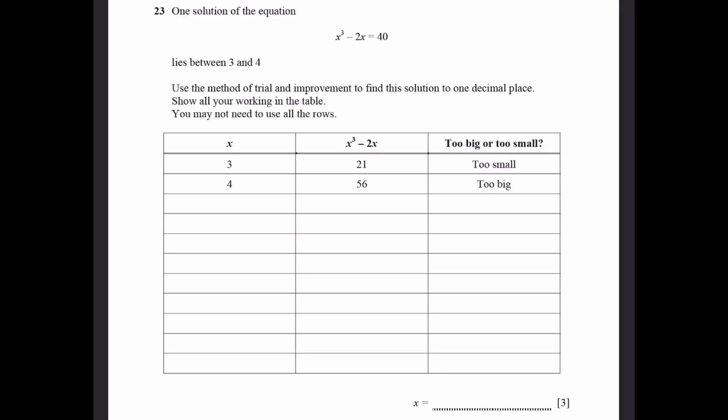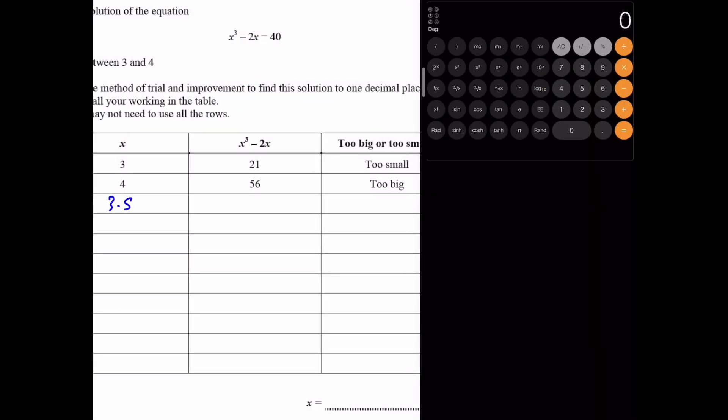Question 23. One solution of the equation x cubed minus 2x equals 40 lies between 3 and 4. Use the method of trial and improvement to find the solution to one decimal place. We have, when x is 3, x cubed minus 2x is 21. It's too small. And for 4, x cubed minus 2x is 56. That's too big. Let's do 3.5. 3.5 cubed minus 2 into 3.5. That's 35.875, which is too small. So we do 3.7. 3.7 cubed minus 2 into 3.7. That's 43.253, which is too big.